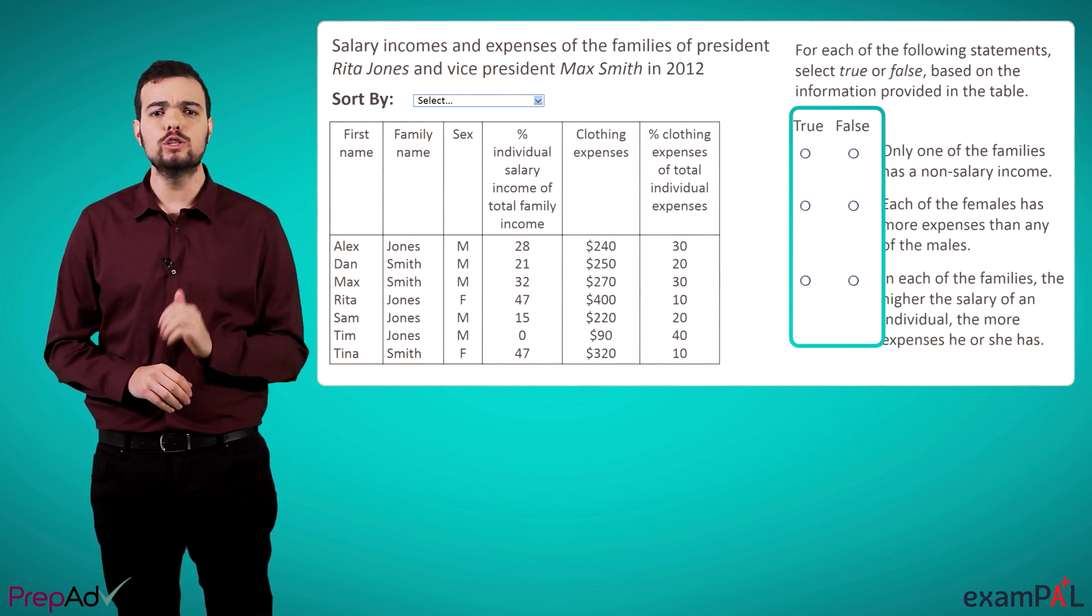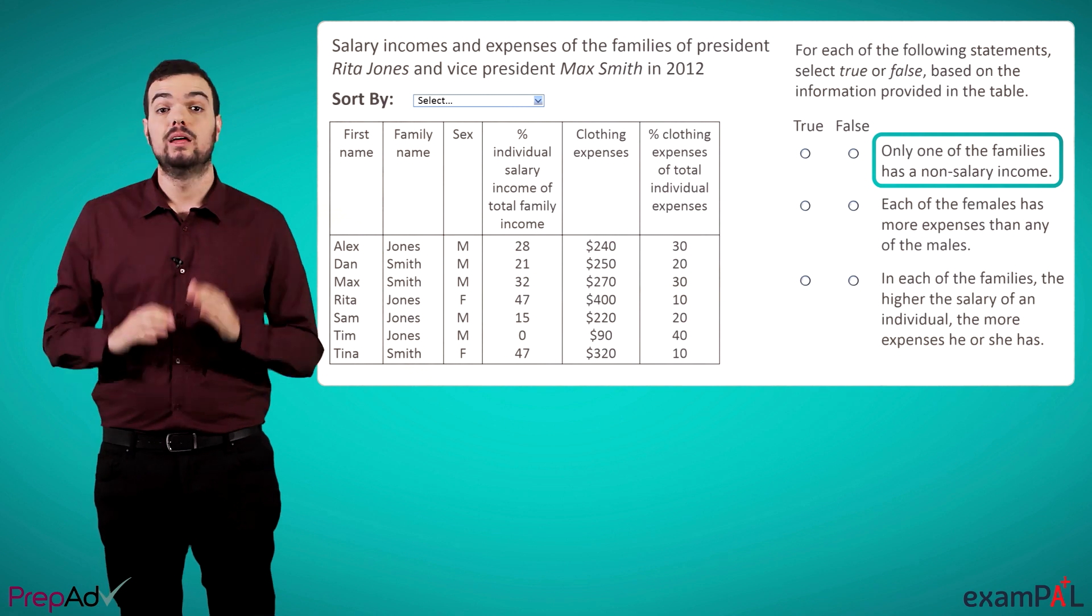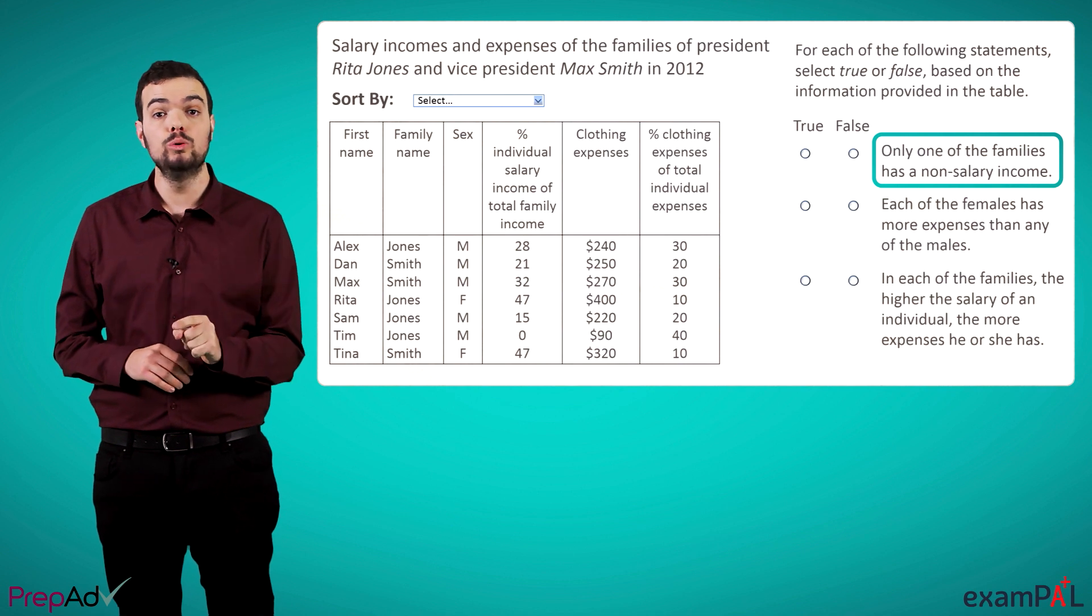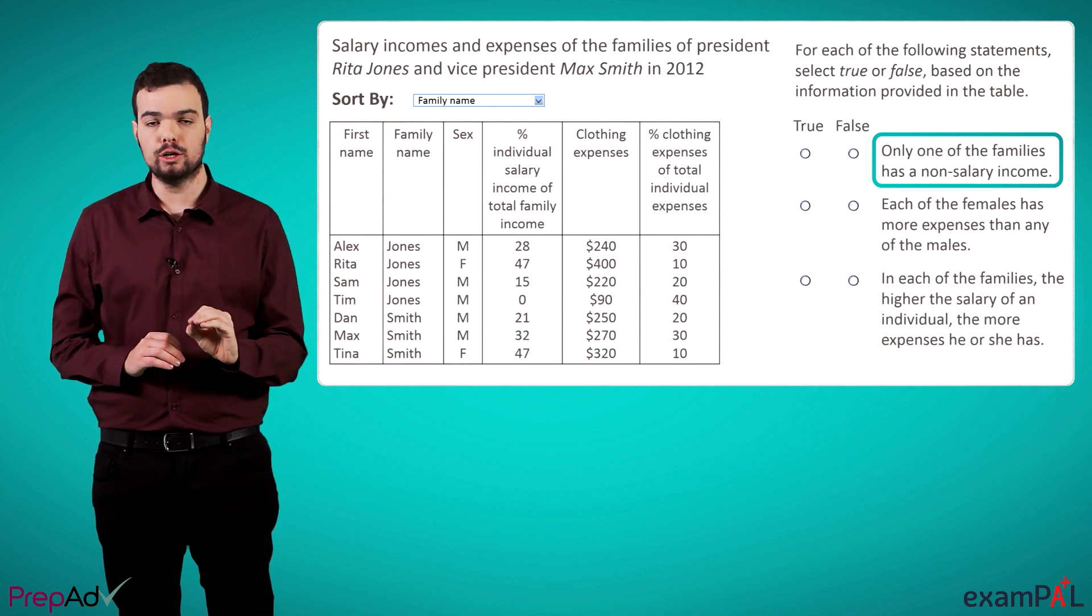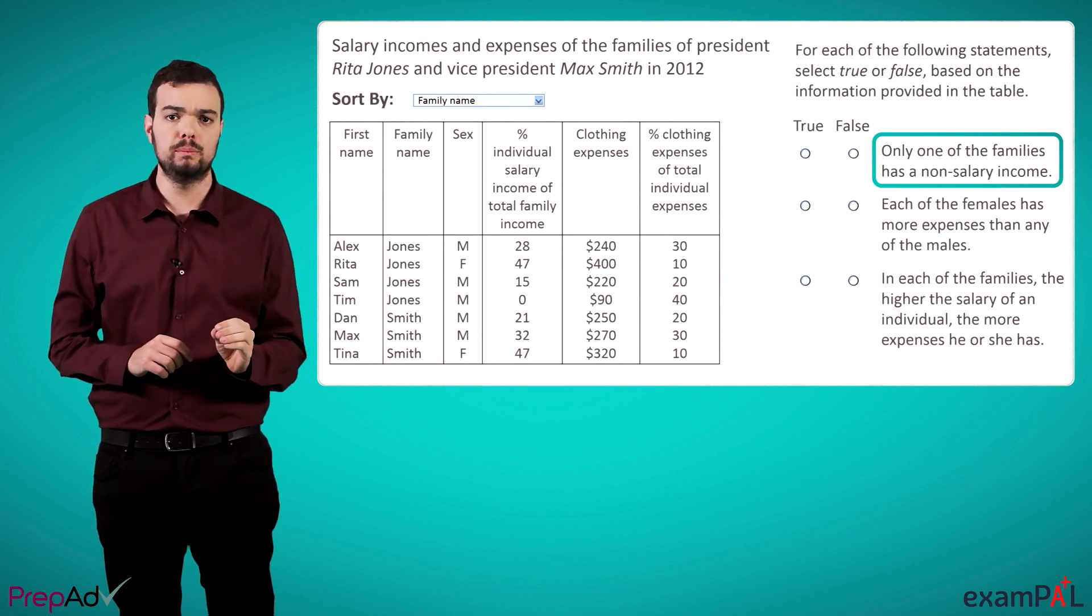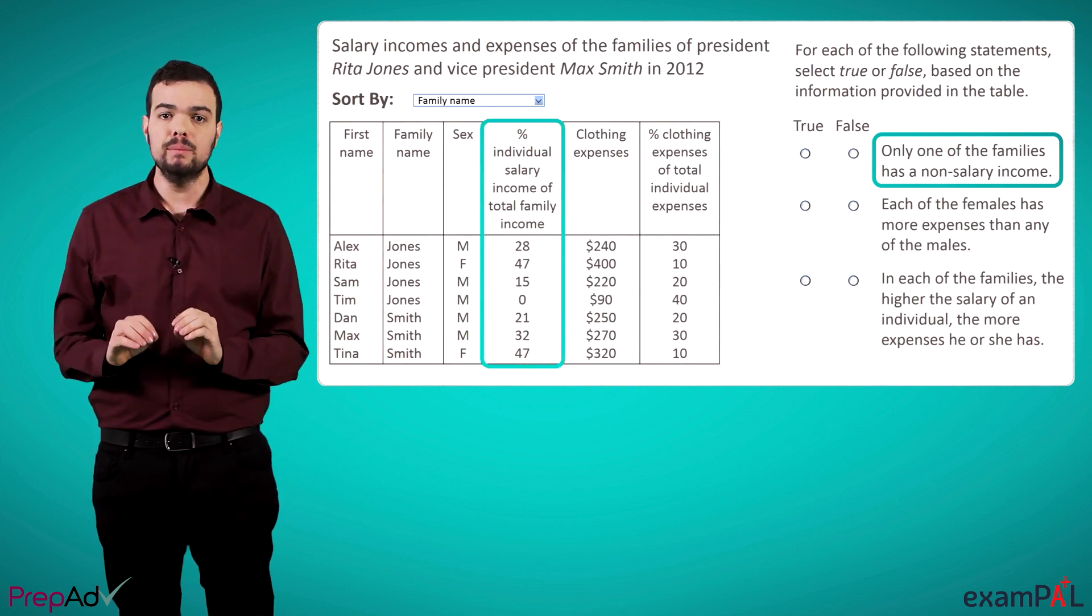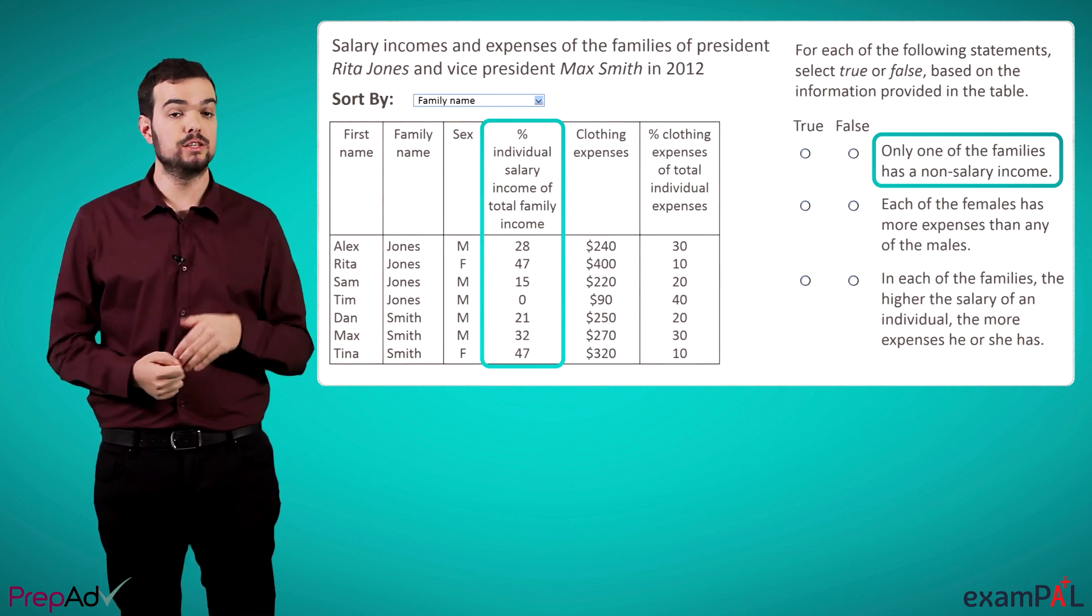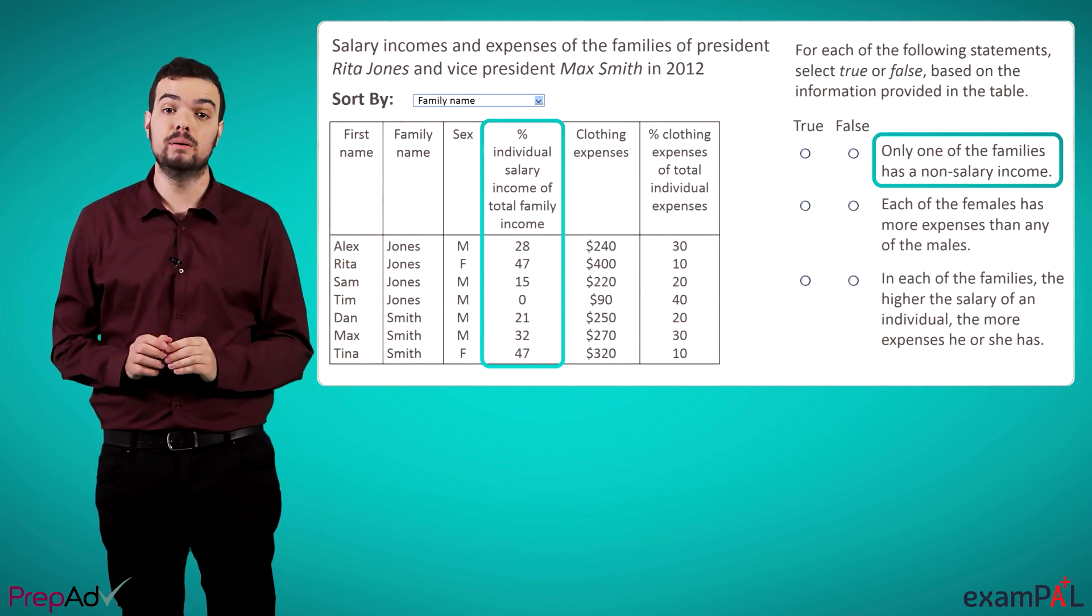To give an example, let's look at the first statement in this question. Only one of the families has a non-salary income. Now, it's clear from this statement that we're going to have to compare both families, so we should sort by family name. Following this, we have to figure out which is the relevant column to find what we are looking for. Since we are asked about the relationship between income and salary, this is the fourth column. By summing up the percentages of each person's salary out of the entire family's income, we can see that the Jones family sums up to less than 100%, meaning they must have some additional income.